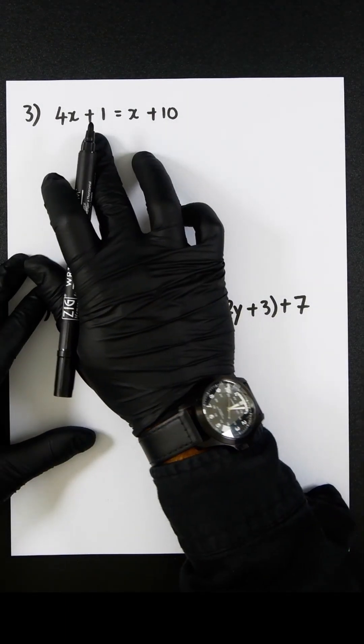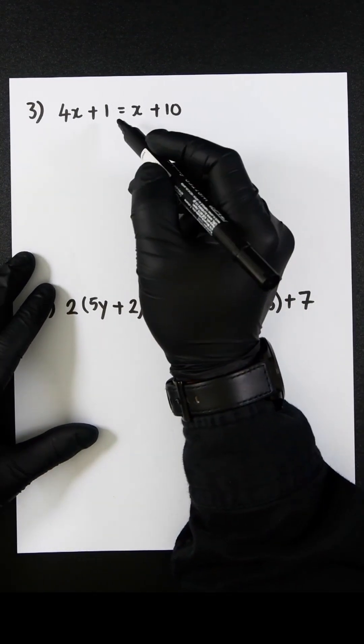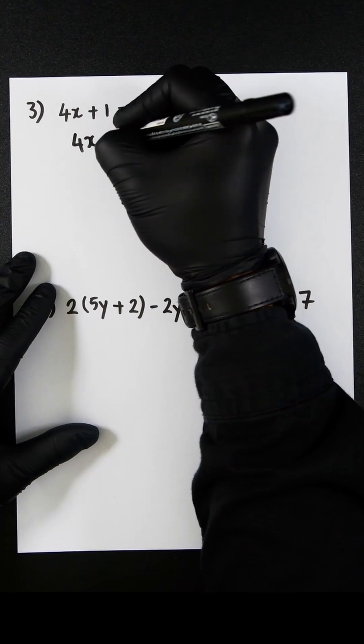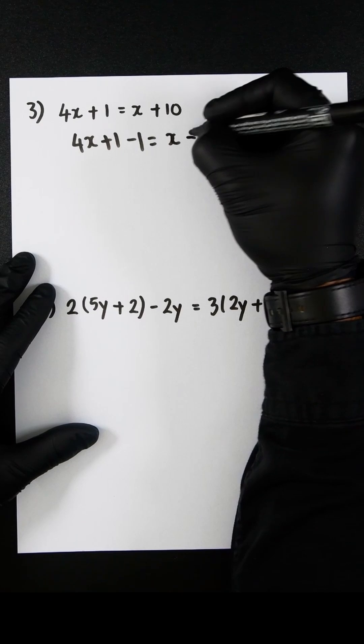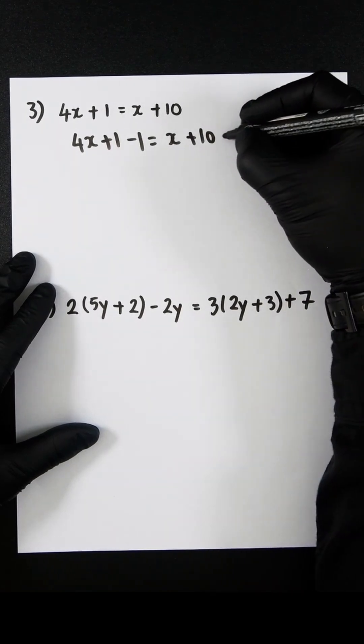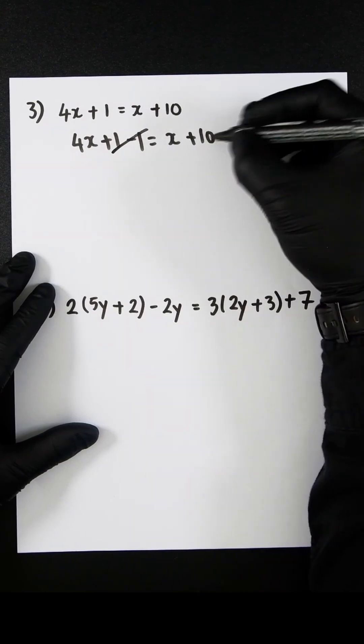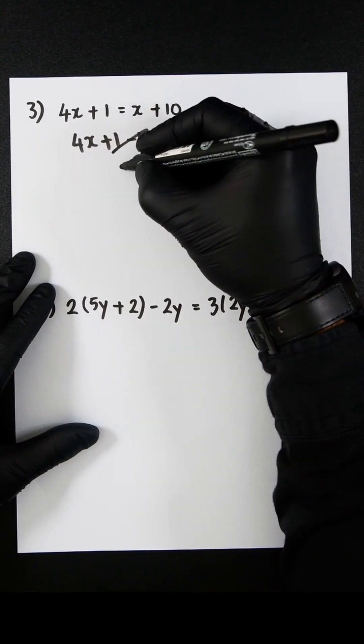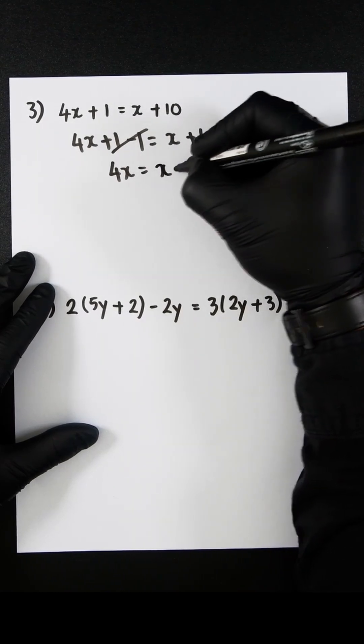So let's firstly move this 1 to the right-hand side by subtracting 1 from both sides. So 4x plus 1 minus 1 will equal x plus 10 minus 1. These will cancel out and 10 minus 1 would be 9. So we would then have 4x equals x plus 9.